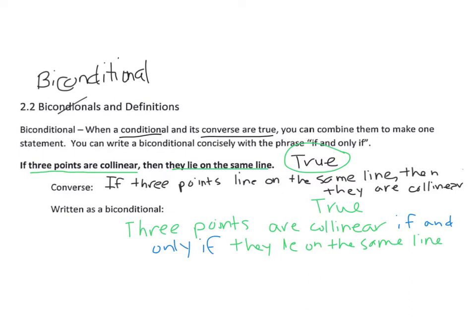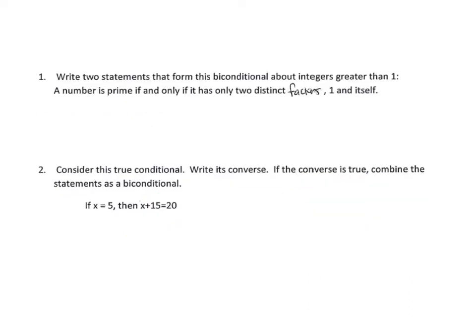Now, write two statements that form this biconditional about integers greater than one: 'A number is prime if and only if it has only two distinct factors, one and itself.' The first part is the hypothesis and the second is the conclusion. To write two statements, use: if hypothesis then conclusion, and if conclusion then hypothesis.